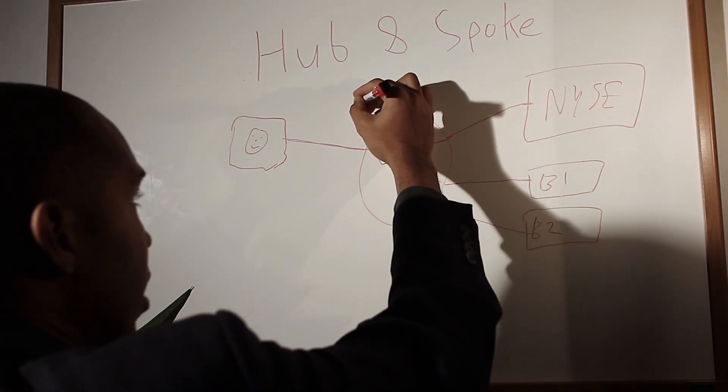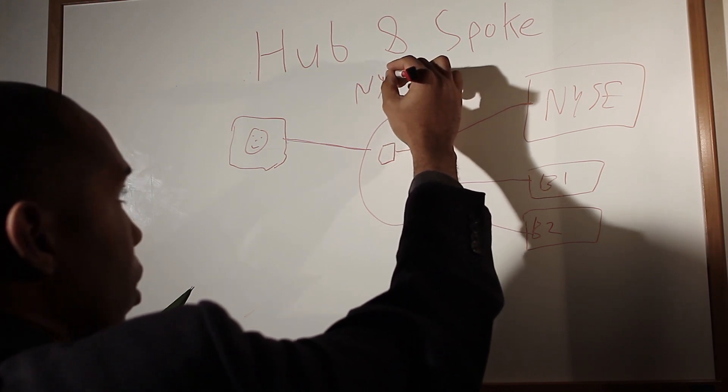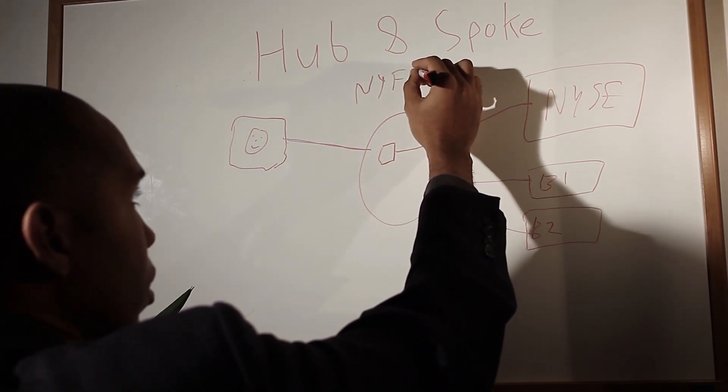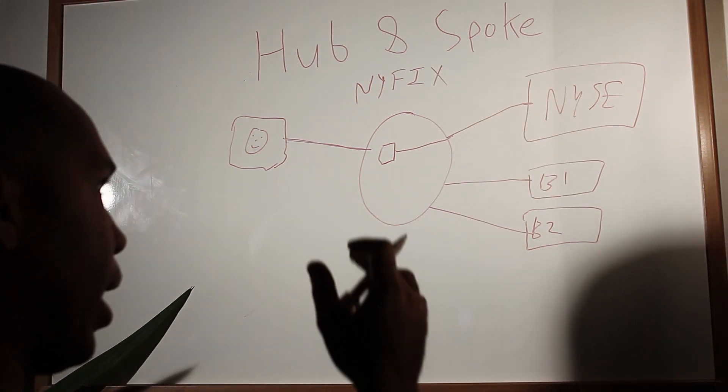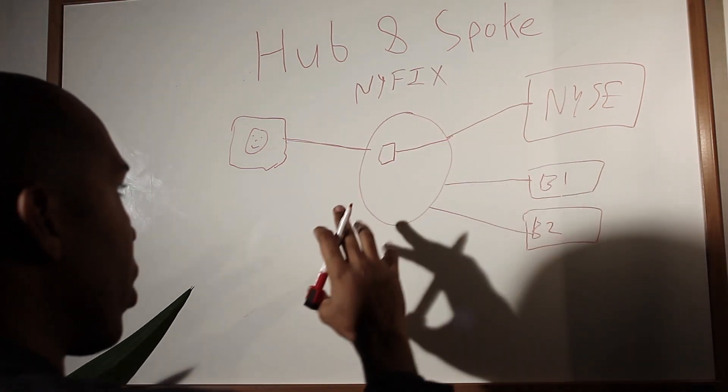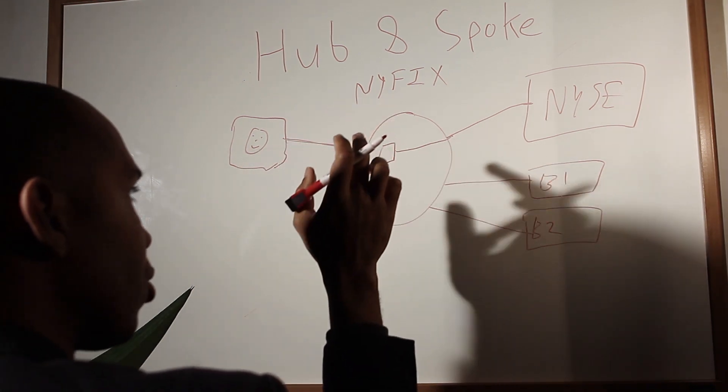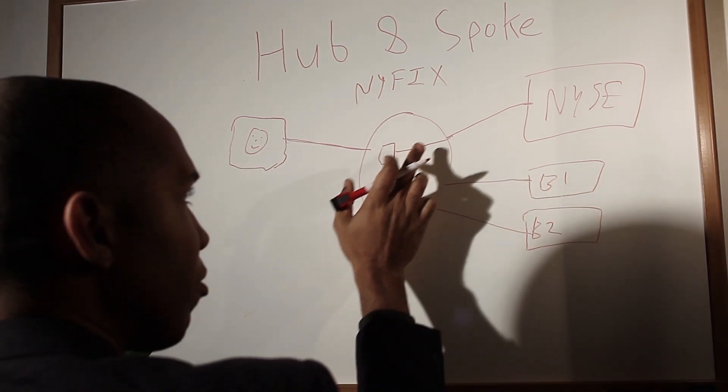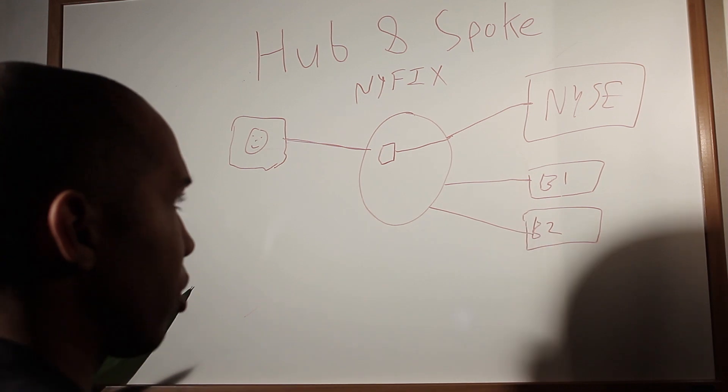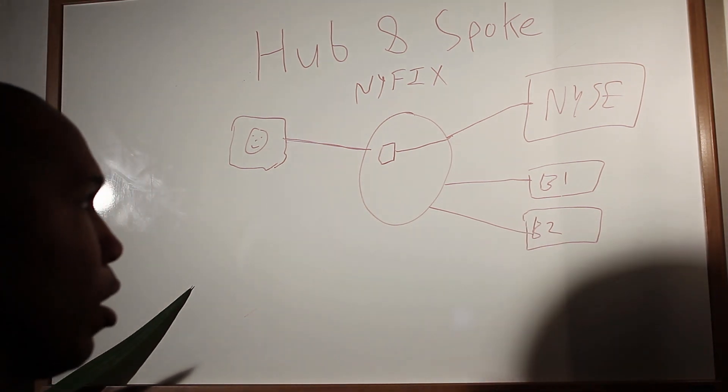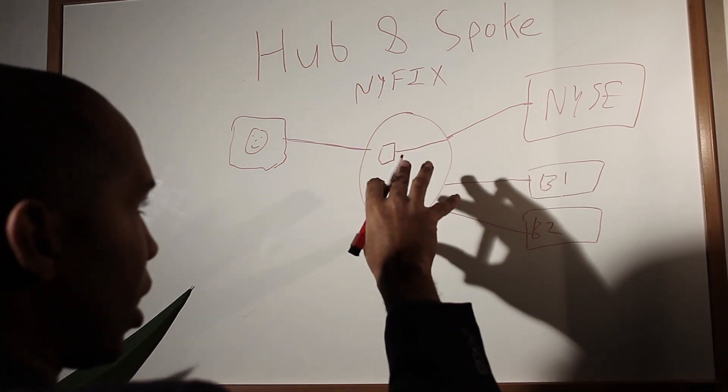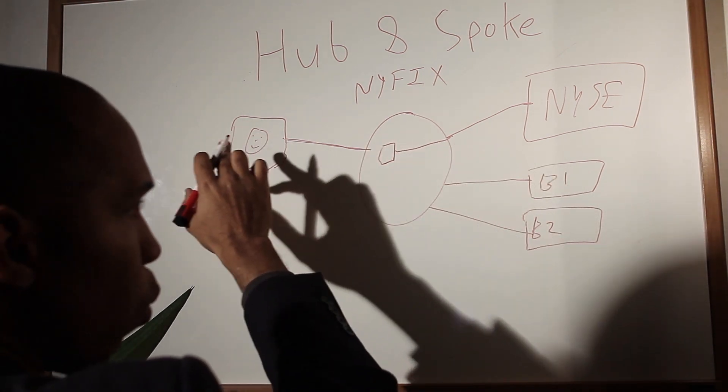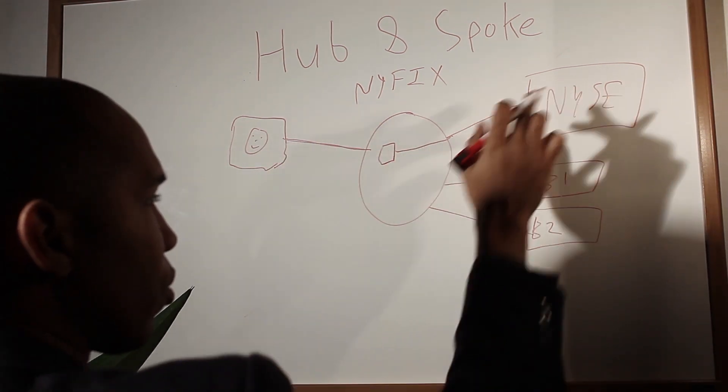We had NIFICS was a hub and spoke network that we used to use. And so this would be their network. So I'm paying them for access to their network, which gives me access to all of these potential destinations. Obviously, the fees are based on what I'm connecting to and all these kinds of things. But the bottom line is they have all these connections. All I need to do is connect to one place. And now I can access the New York Stock Exchange.